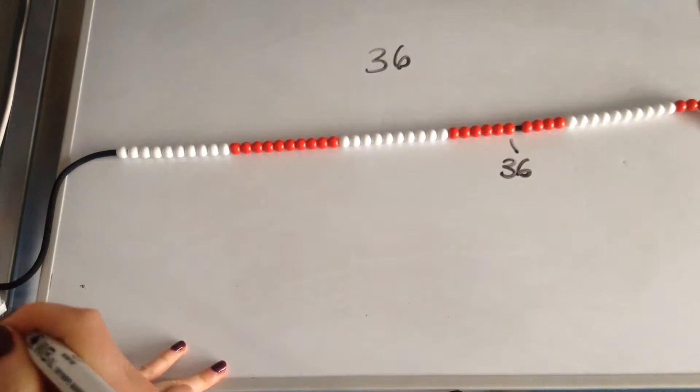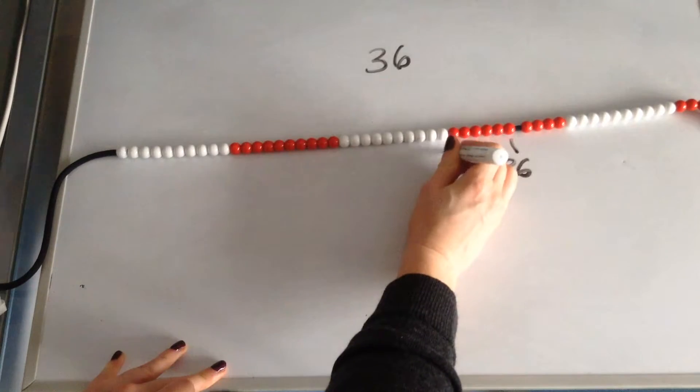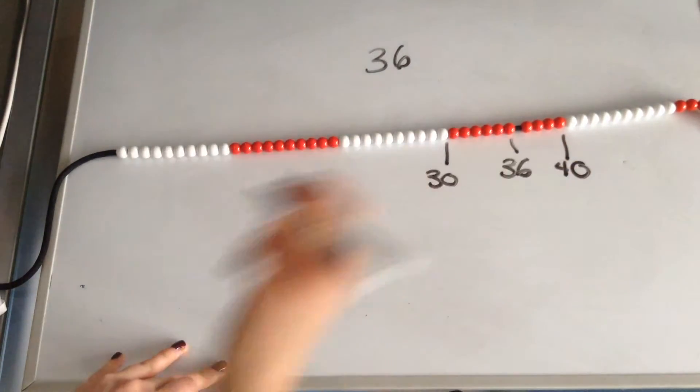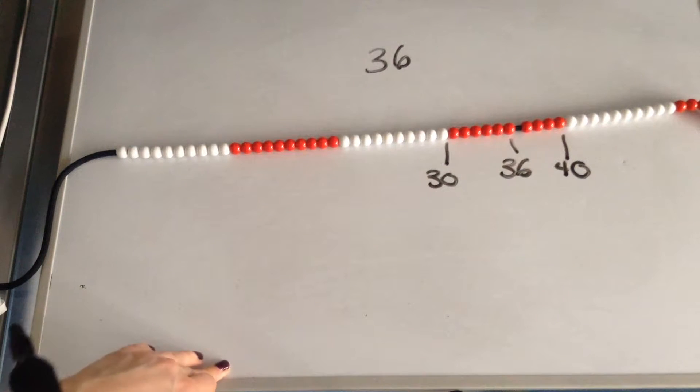I know that 36 sits in between 30 and 40. They're the two multiples of 10 that it sits in between. I know that 36 is 6 more than 30 and it is 4 less than 40, so it is nearest to 40.